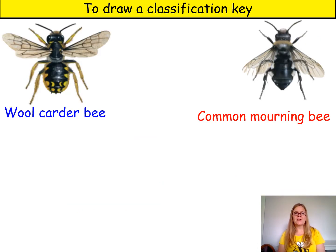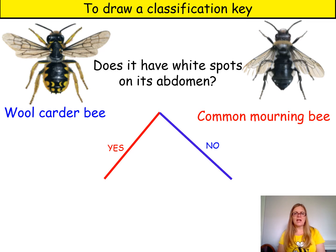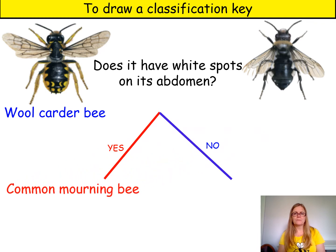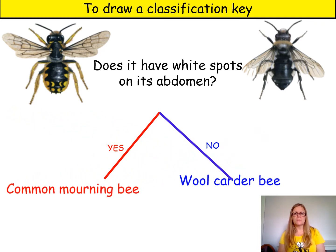Now choose two more bees. I've chosen a wool carder bee and a common mourning bee. Think of a yes/no question which separates them, such as: does it have white spots on its abdomen? If you observe very carefully you will notice that the answer is yes for the common mourning bee, but the answer is no for the wool carder bee. So the question separates them.